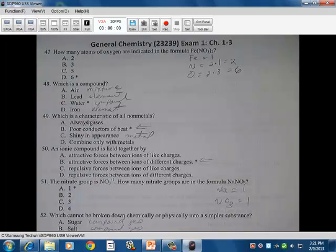Which is a compound? Air is a mixture of a variety of unrelated things. Lead is an element. Iron is also an element. And water is a compound created of the elements hydrogen and oxygen. H and O in the formula H2O. So it's the only compound that's there. 49. Which is a characteristic of all non-metals? They're always gases. No. They're shiny in appearance. No, that's metals. Combine only with metals. Nope. You can have non-metals combined with one another as well. They are poor conductors of heat as well as poor conductors of electricity. That is true.